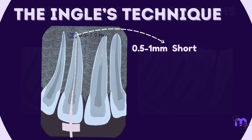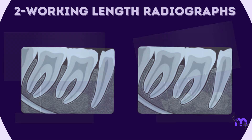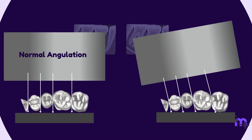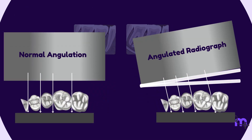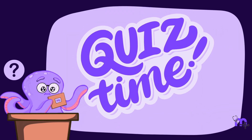At times you might need to take two working length determination radiographs — one at normal angulation and another at around 20 degrees mesial or distal horizontal angulation — allowing better visualization of root canals.